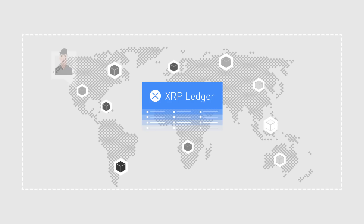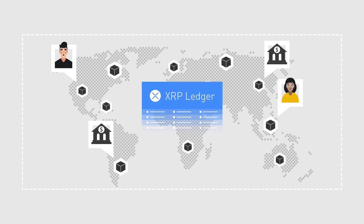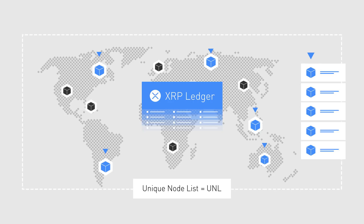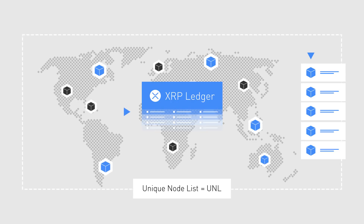These nodes can belong to anyone, from individuals to banks. However, Ripple recommends its clients to use a list of identified, trusted participants, also known as Unique Node List, or UNL, to validate their transactions. The nodes in the Unique Node List continually exchange transactions with other nodes on the list, and the goal of consensus is for each node to apply the same set of transactions to the current ledger. Transactions that are agreed upon by a supermajority of nodes are considered valid.